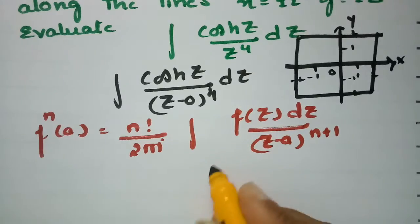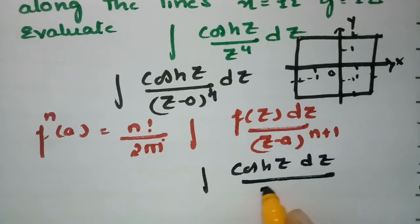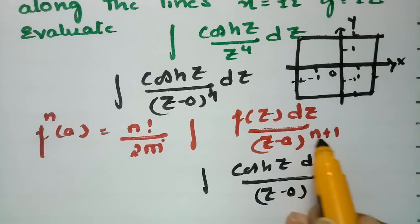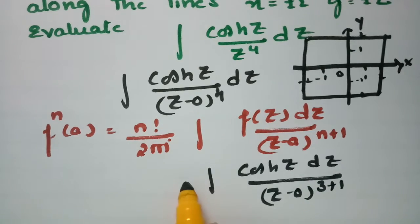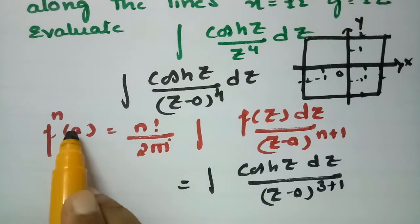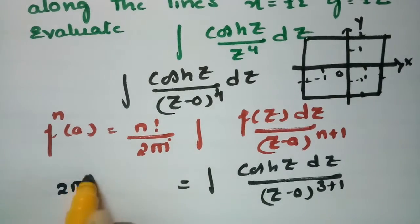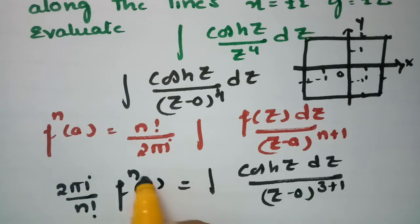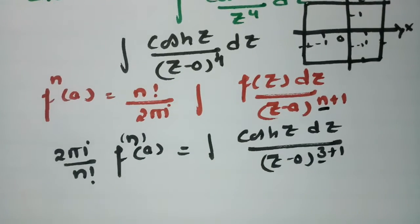Substituting into the formula, the integrand is cosh(z) dz / (z − 0)⁴, which we write in the form (z − a)^(n+1). So 4 can be written as 3 + 1. Rearranging, the integral equals (2πi / n!) × f⁽ⁿ⁾(a). Comparing, n = 3.